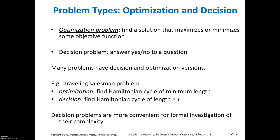There are two problem types: optimization problems and decision problems. An optimization problem finds a solution that maximizes or minimizes some objective function. A decision problem answers a yes-or-no question. Many problems have both decision and optimization versions. For example, the Traveling Salesman Problem is an optimization problem — find the Hamiltonian cycle of minimum length — but in order to find the Hamiltonian cycle, you are also making decisions, so it combines both.